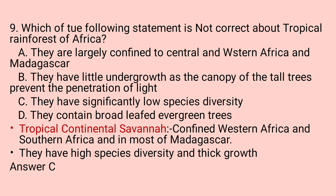Equatorial or tropical rainforests in Africa are largely confined to Central, Western Africa, and Madagascar. They have little undergrowth because the tall tree canopy blocks light. The forest has three layers: tallest, medium, and shortest. They have significantly HIGH species diversity — not low species. So the answer is C, which incorrectly states low species.